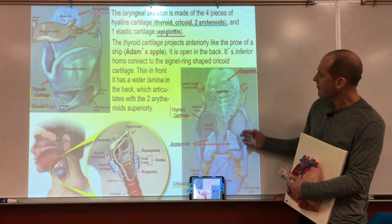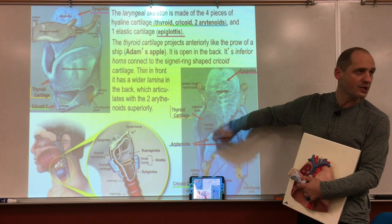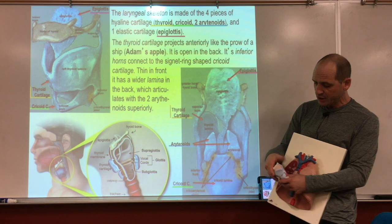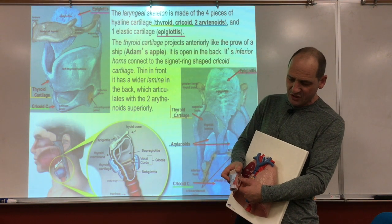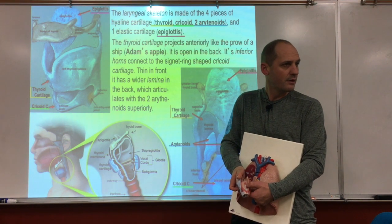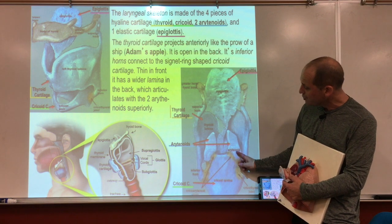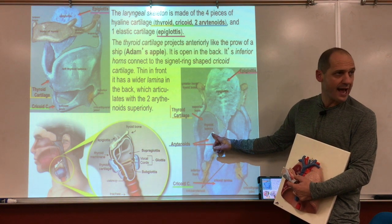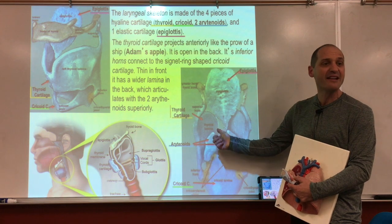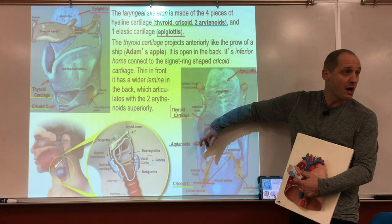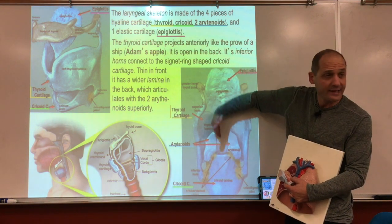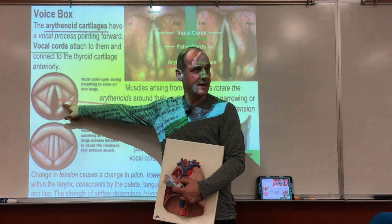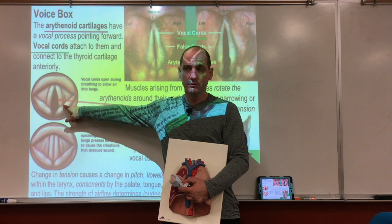The front of the larynx going forward is the thyroid cartilage — that's the adam's apple. Below it is the cricoid cartilage, which is small in the front but thick in the back. From that back cartilage, two arytenoids stick up like horns, and the vocal cords attach to them going forward to the adam's apple. Muscles rotate the arytenoids, changing the opening — the glottis — and when air passes through those vibrating cords, that makes the voice.